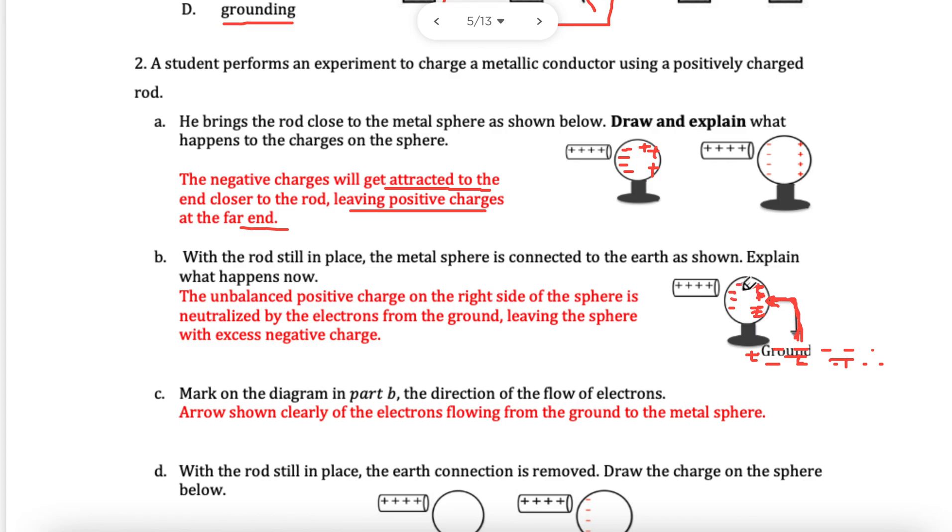That means I have extra electrons here, right? If I then disconnect the ground, the electrons are now stuck. Look, I have a negative charge now. So I have explained it, and you can write that as well. So the unbalanced positive charge, it just says it's neutralized by the electrons. You can simply say electrons come up from the ground because they're attracted to the positive charges on the right-hand side.